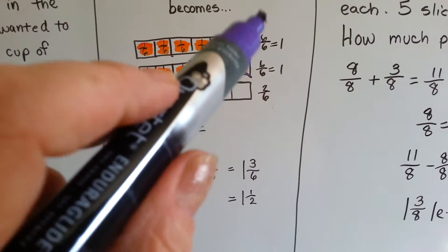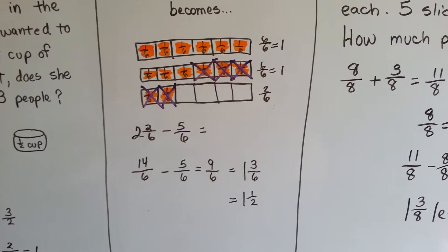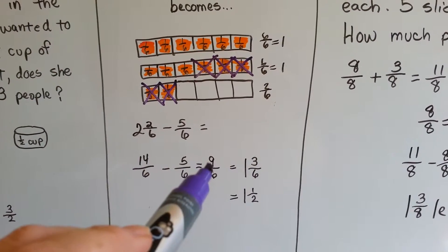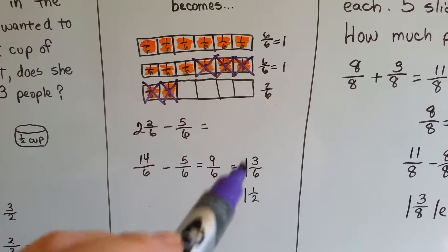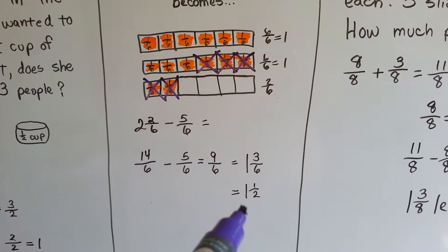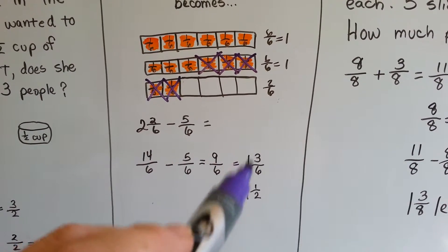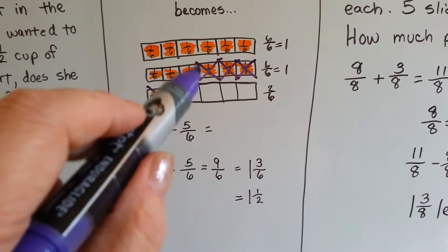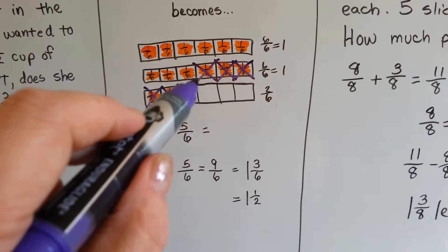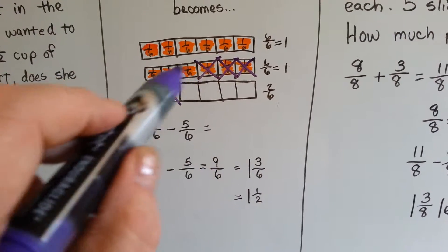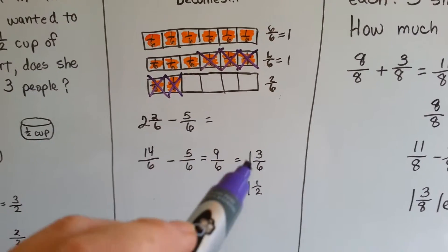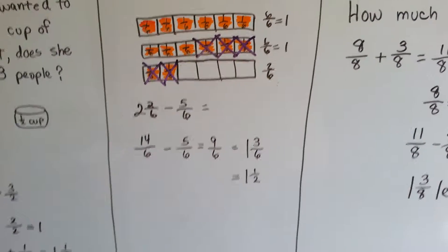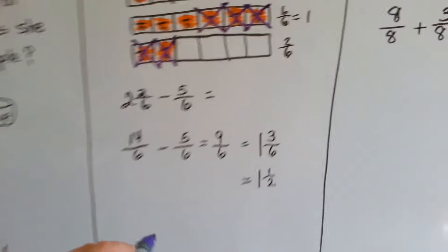Six-sixths is one whole one. We take that away from there, and it leaves us with three-sixths. And three-sixths is half — see, that's half of the candy bar. So three-sixths is really a half, so we'd have one and a half.